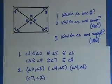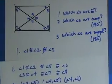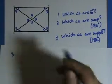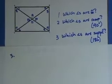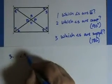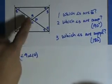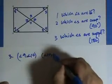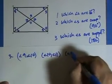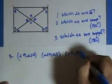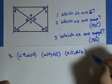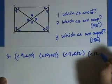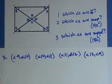That's basically—oh, I didn't answer the third question. Third question: which angles are supplementary? Angle 9 and angle 10 are supplementary—that's the linear pairs there. Angle 10 and angle 11, angle 11 and angle 12 are supplementary, and one last one: angle 12 with angle 9, those are supplementary.